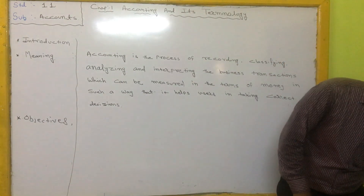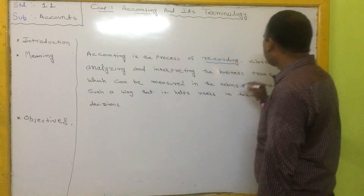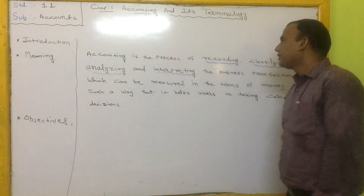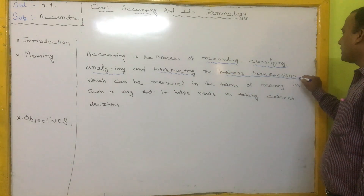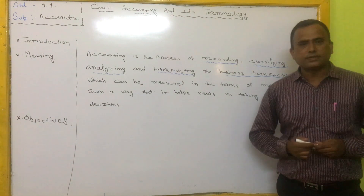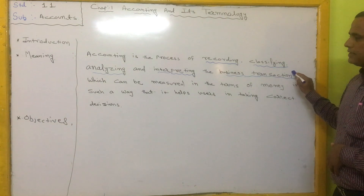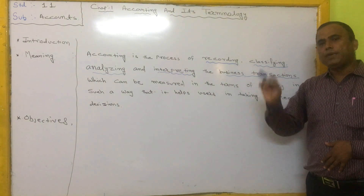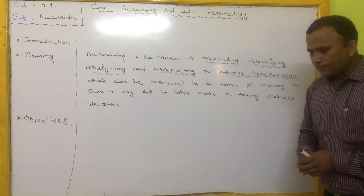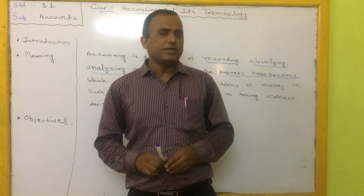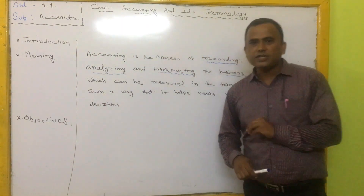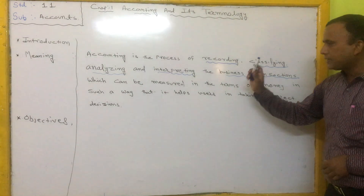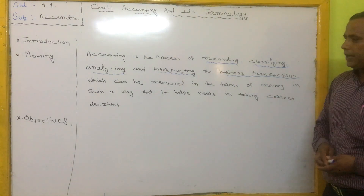So there are four main processes: first, record the transaction in various books; second, classify the transaction; third, analyze it; and fourth, interpret the business transaction. A business transaction means whenever we exchange goods and services against money. Only transactions measurable in terms of money are recorded in the accounting book — for example, salary paid to a worker is recorded, but the efficiency of that worker is never recorded.